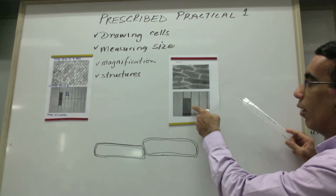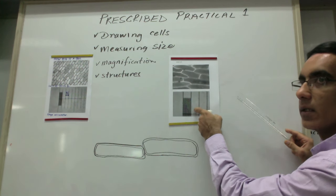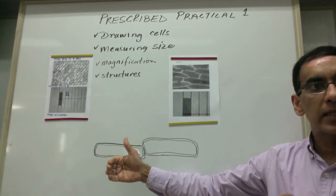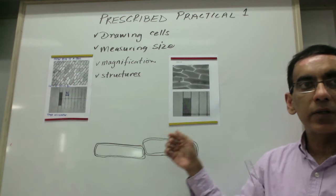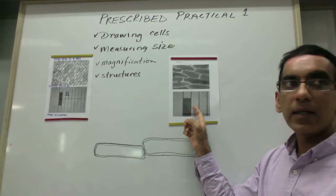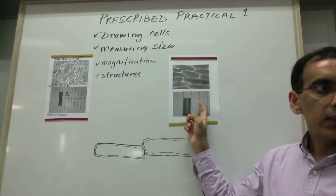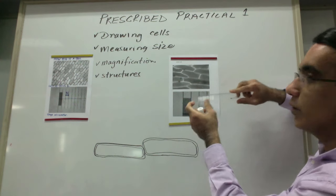Because the whole stage micrometer is two millimeters in size and each millimeter is divided into 10 sections, then each section is 0.1 of a millimeter. Each little line.